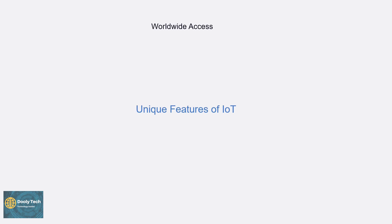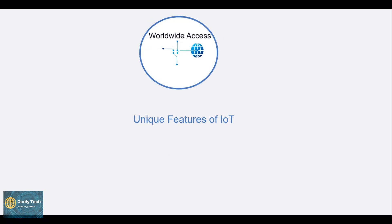The first feature is worldwide access, which is otherwise called connectivity. IoT establishes proper connection between all IoT things and IoT platforms — it may be the server or the cloud. IoT provides bi-directional communication between the server and the cloud anywhere, anytime.